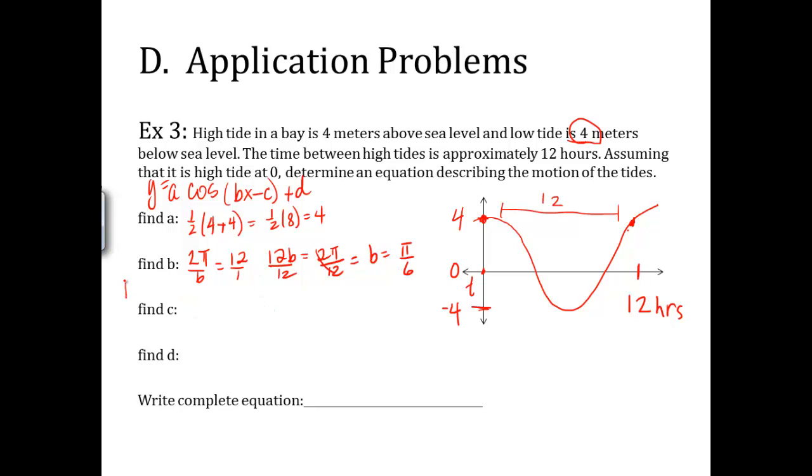c. Remember, c is bx minus c equals 0. Well, it's bx. If I move the c over, it equals c. So b we just found is pi over 6. x. What's the x value where my curve starts? Well, in this picture, it's a 0. So guess what? c is equal to 0. That's an easy one.